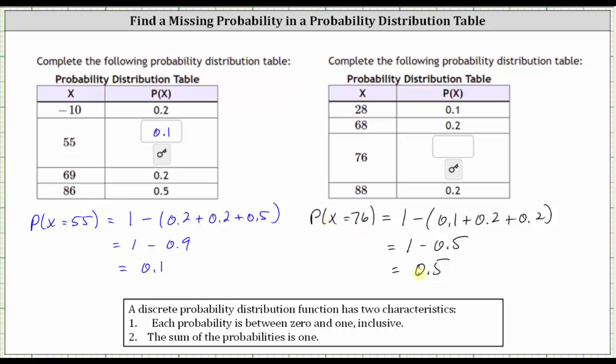The probability that x is equal to 76 is 0.5. I hope you found this helpful.